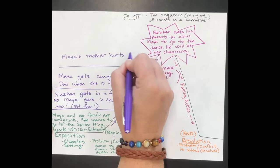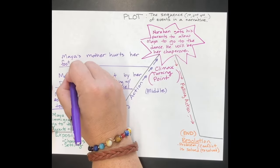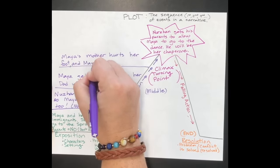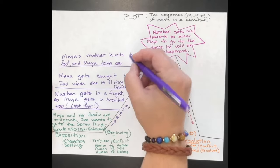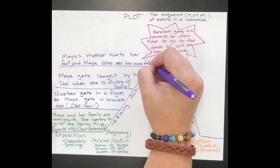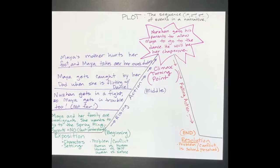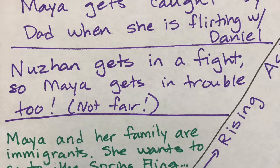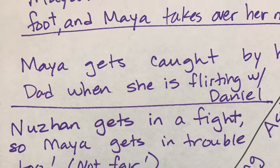Then another element of the plot is that Maya's mother hurts her foot. This gives Maya a chance to show what a responsible daughter she is, that she's growing up. She gets to take on her mom's duties and help out the family. I think that helps Maya's mother to see that Maya would be mature enough to go to the dance.